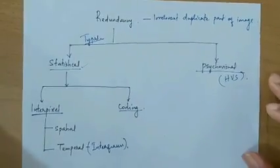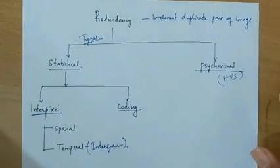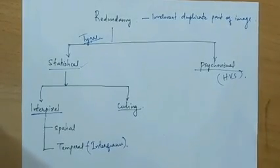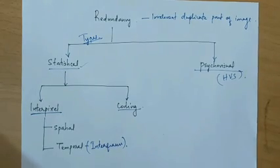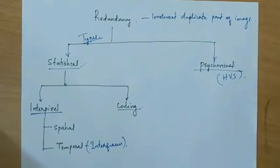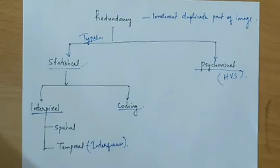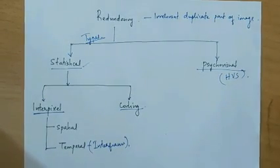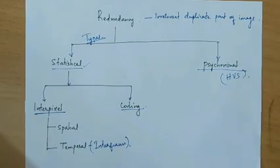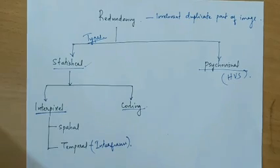Hello everyone. In this session we will discuss about redundancy and different classifications of redundancy. As I explained in the previous lesson, redundancy means irrelevant or duplicate part of an image. During image compression, this redundant information or duplicate information will be reduced by different compression schemes. The elimination of redundant information is basically known as image compression.